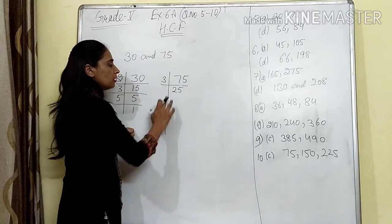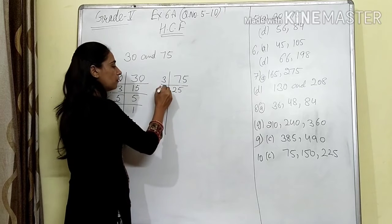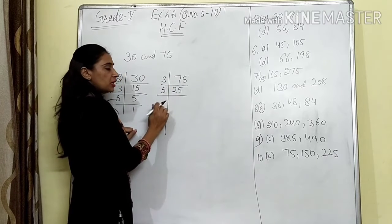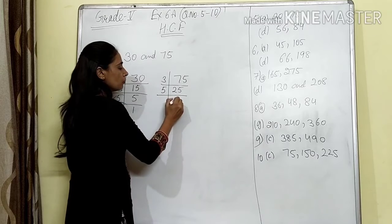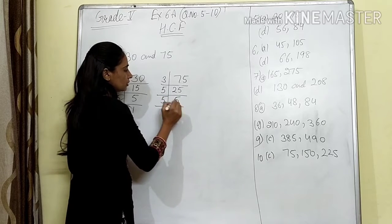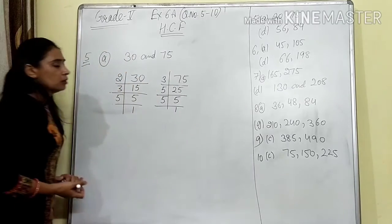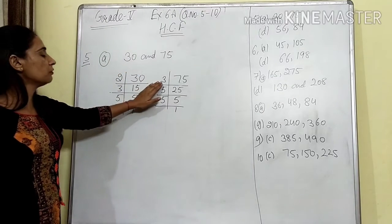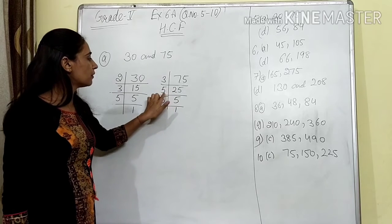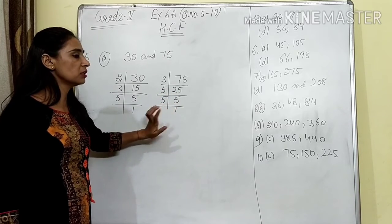Now 25. We know that 25 comes in the table of 5, and 5 is a prime number. So we take 5 — 5 fives are 25, and 5 ones are 5. We divide down until we get 1.